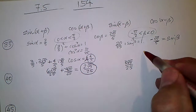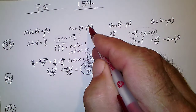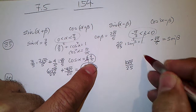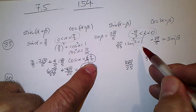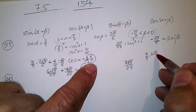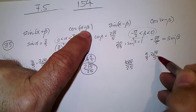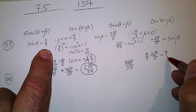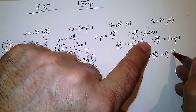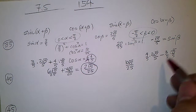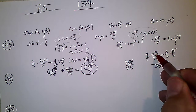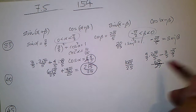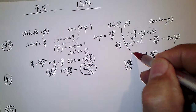For cosine of alpha plus beta, the formula is cosine alpha cosine beta minus sine alpha sine beta. That's 4/5 times 2√5/5 minus 3/5 times negative √5/5. Both terms have a denominator of 25. The numerator gives 8√5 plus 3√5, which is 11√5 over 25.